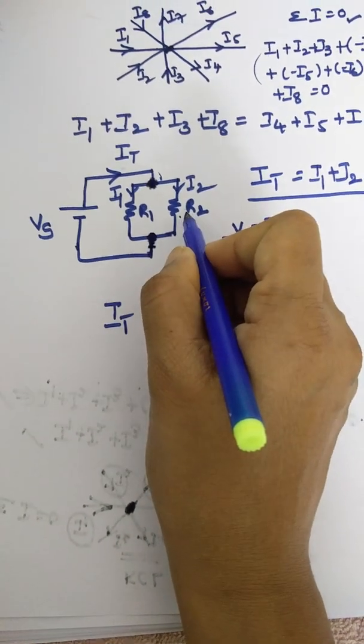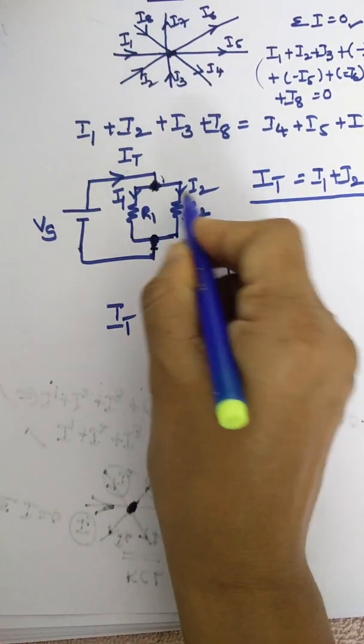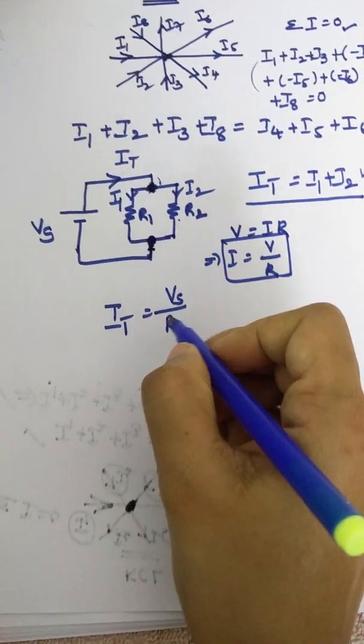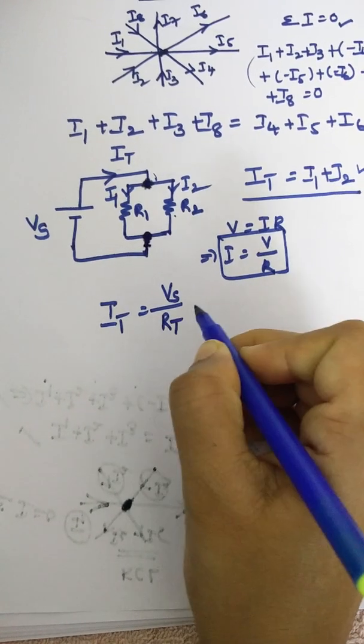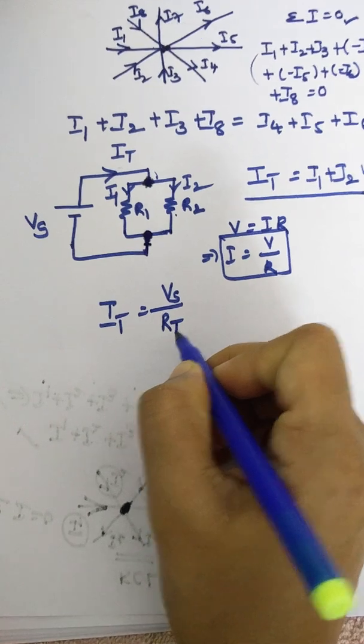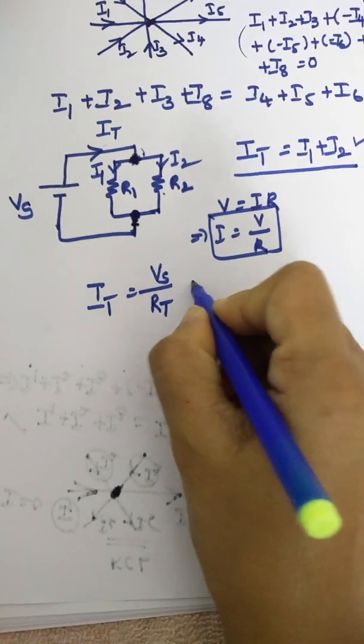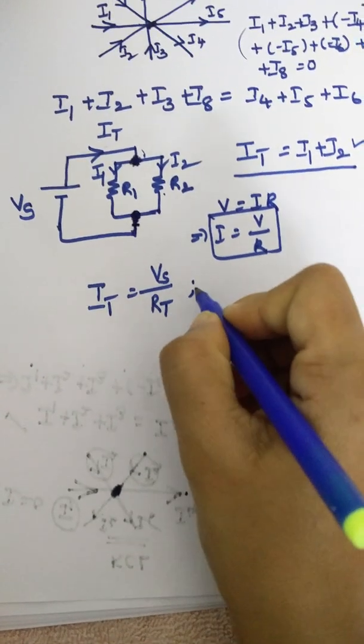Either R1 or R2, we do not know. So collective resistance we should write. Let us assume that total resistance as Rt. We do not know what is Rt. So this is It.